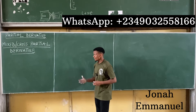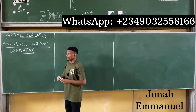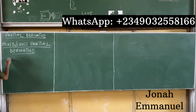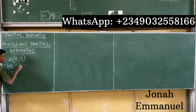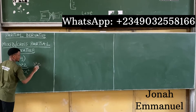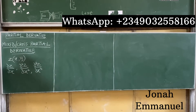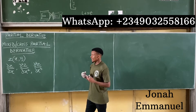Welcome to another class on partial derivatives. Today we'll be looking at mixed or cross partial derivatives. So how does this work? If we're given a function z in terms of x and y, we can have something like ∂z/∂x, and then higher partial derivatives like ∂²z/∂x² or ∂³z/∂x³. But there is another form called the cross or mixed partial derivative.